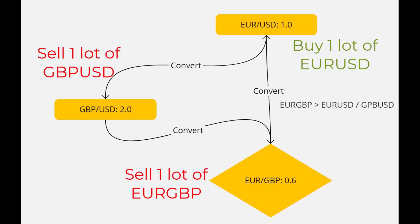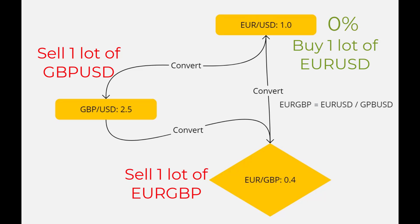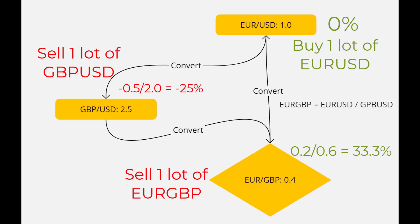We just have to wait for the prices to correct. Let's say the EURUSD stays at 1 dollar, the GBPUSD is 2.5, and the EURGBP corrects to exactly 0.4. The EURUSD position is at 0% profit. The GBPUSD is at 0.5 divided by 2, so 25% loss. While the EURGBP is at 0.2 divided by 0.6, so 33% profit. After realizing this, we took advantage of the broker's mispricing using arbitrage to make a profit.